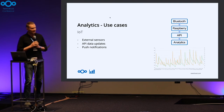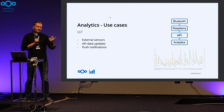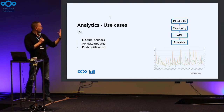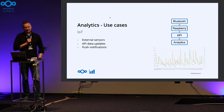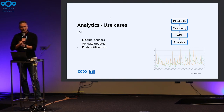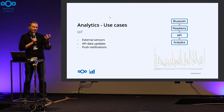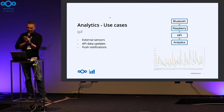Another common use case is IoT: sensors in your home read by a Raspberry Pi, pushed via the API into the Nextcloud analytics app for historic reporting. A nice feature here is integration with Nextcloud's notification system — if sensor values meet certain thresholds, you receive push notifications on your iOS device via the standard iOS app.